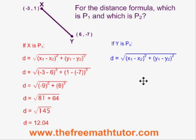If we plug the values into the formula in the opposite order, so that Y is point 1, it looks like this. x1 and y1 are 6 and negative 7, x2 and y2 are negative 3 and 1.